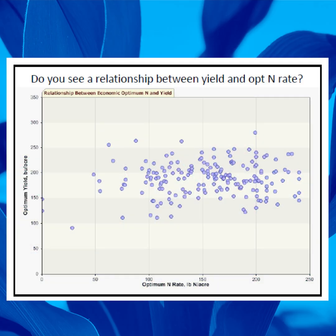For example, in that figure, you will see that we were able to produce 275 bushel corn on 60 pounds of nitrogen in one case. In another case, it took almost 250 pounds of N to produce 250 bushel corn. And you can see that there's a complete scatter there.